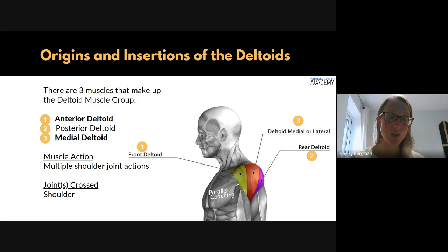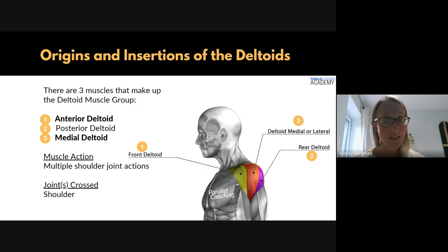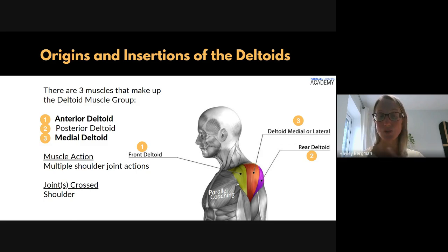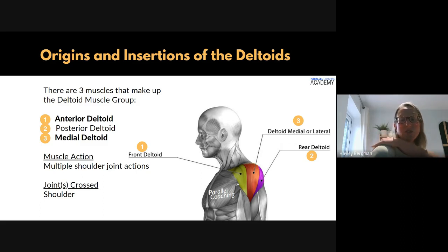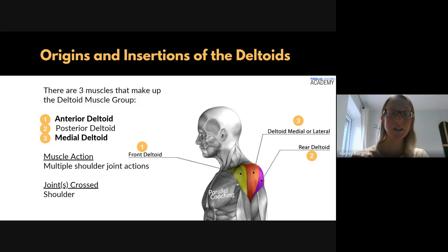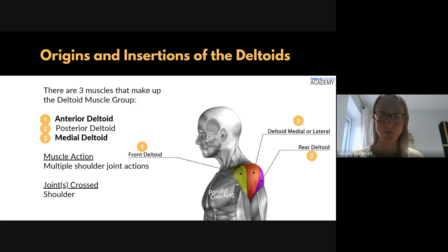Now there are three deltoids. These are known as the anterior deltoid, the posterior deltoid, and the medial deltoid. You can see here on screen that the anterior deltoid is on the front of the shoulder, then you've got the rear deltoid which is on the back of the shoulder. These are directly opposing each other, and then you've got the one through the middle, which is your medial or lateral deltoid. For today we're going to call it the medial deltoid.